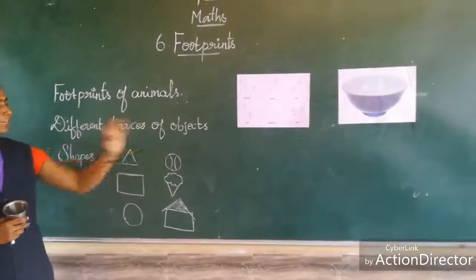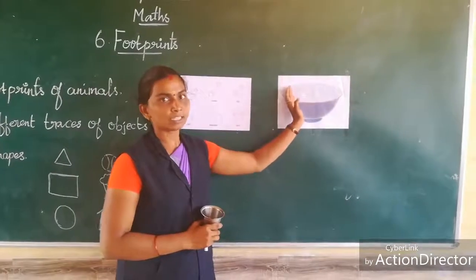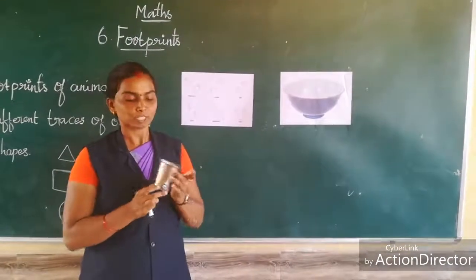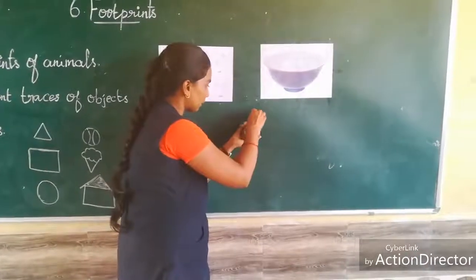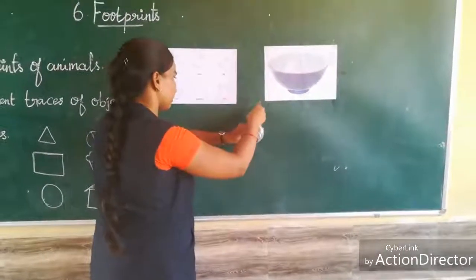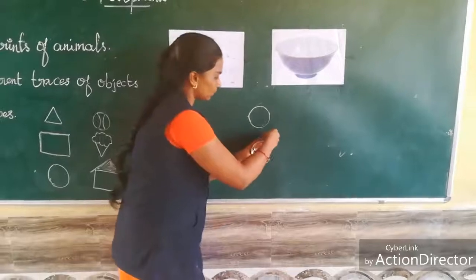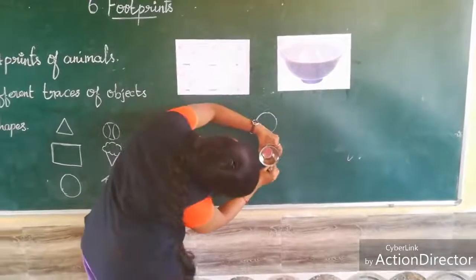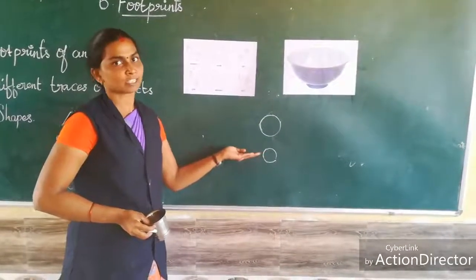Next, different traces of the same object. Look here — this outline is the brim of the bowl, and this one is the base of the bowl. This is the thumb lap, and this one is the brim, and this is the base. Now I am going to trace the brim of the thumb lap. This is the brim of the thumb lap. Next, I am going to trace the base of the thumb lap. Can you see the difference between these two traces? That is called different traces of the same object.